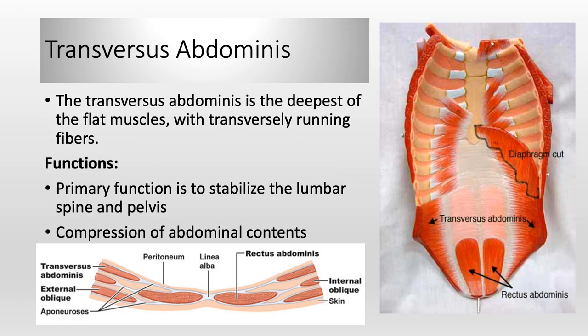Transversus abdominis is the deepest of the flat muscles, with transversally — meaning parallel to the ground — running fibers. Its primary functions are to stabilize the lumbar spine and pelvis and to compress abdominal contents.